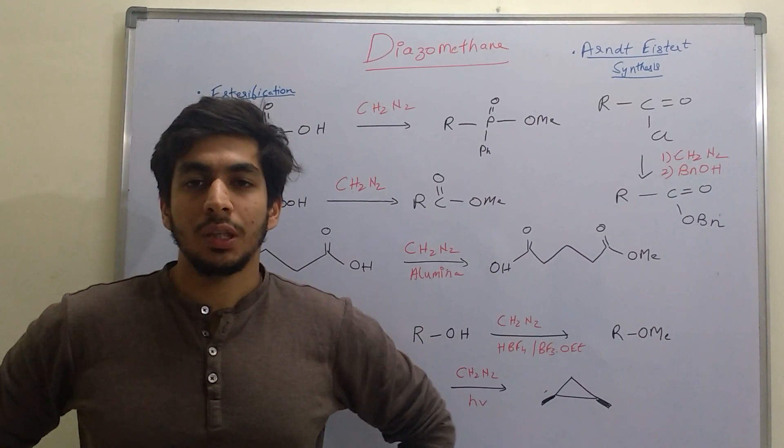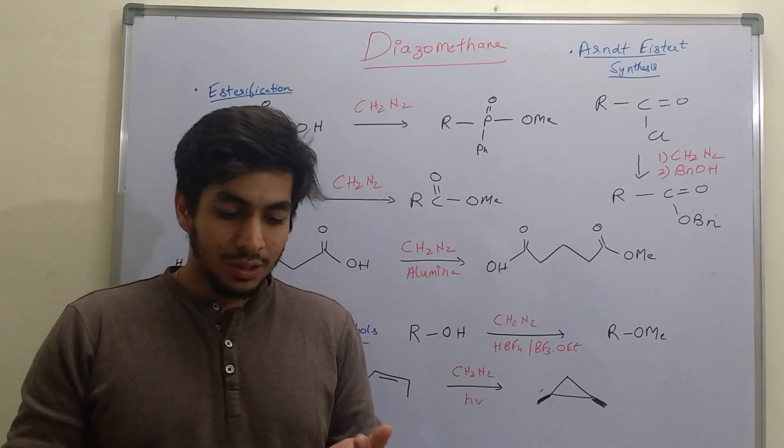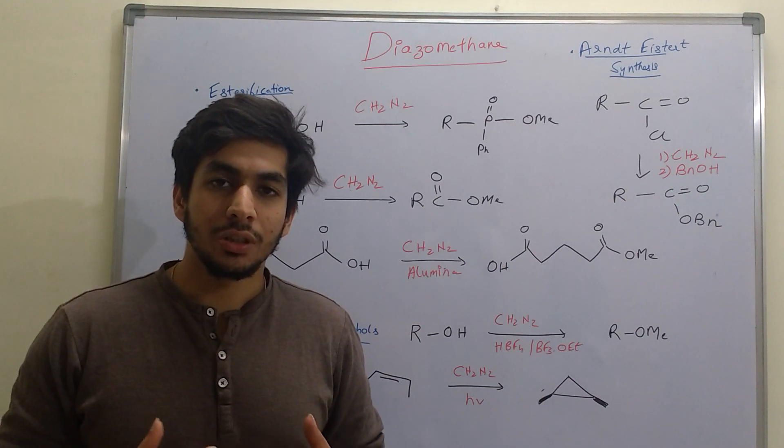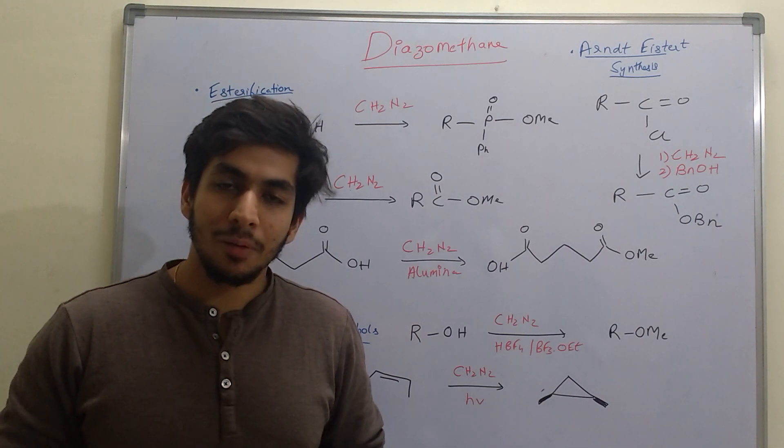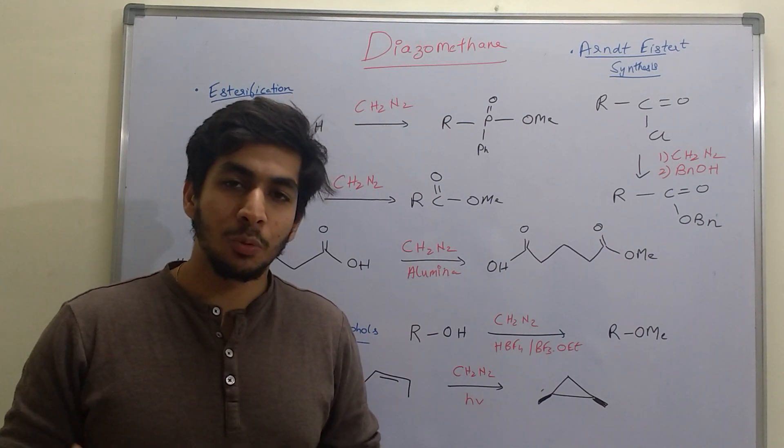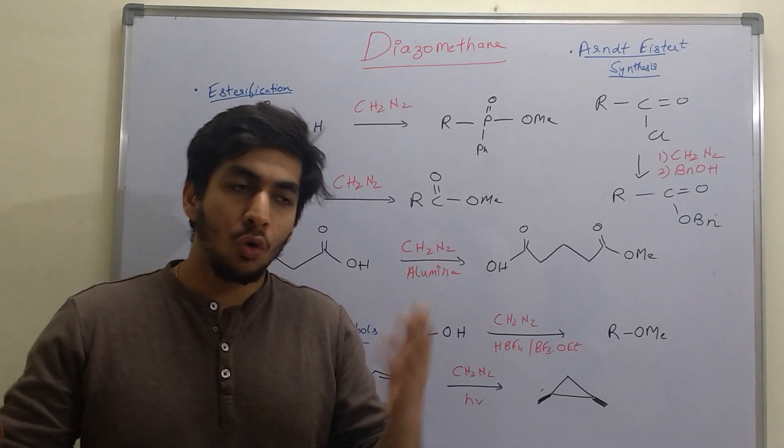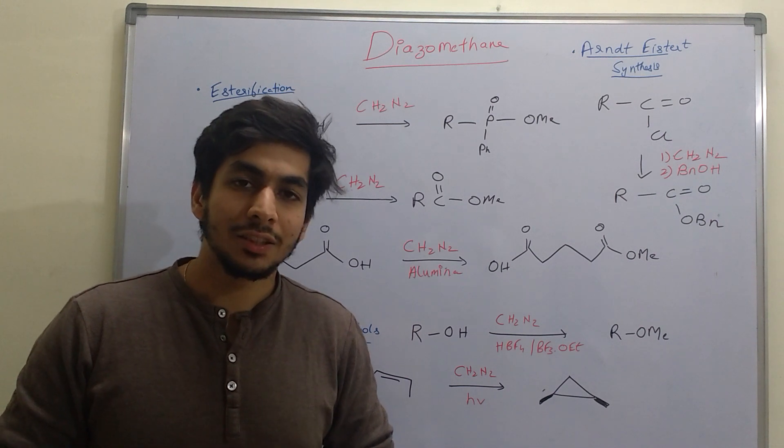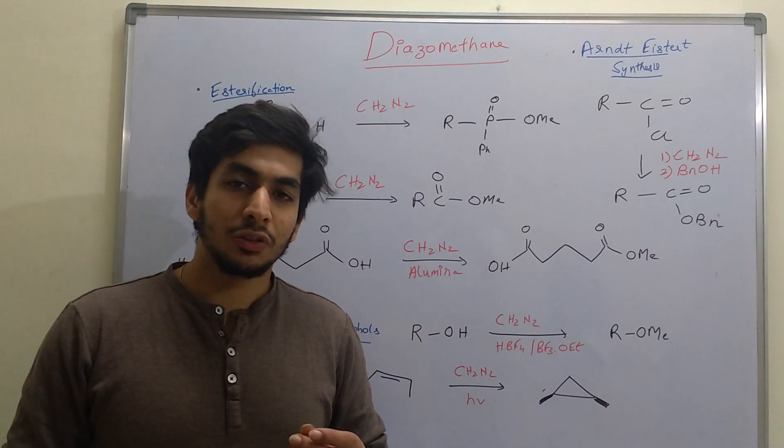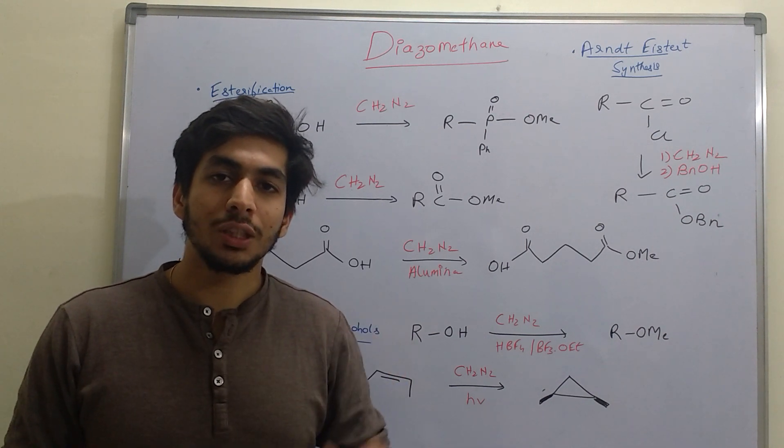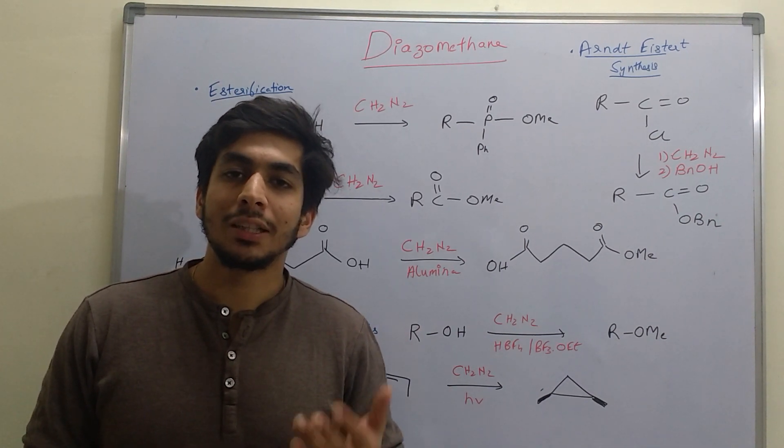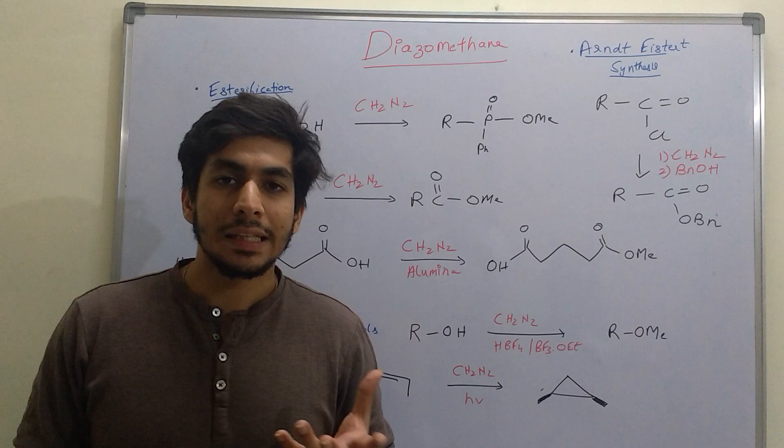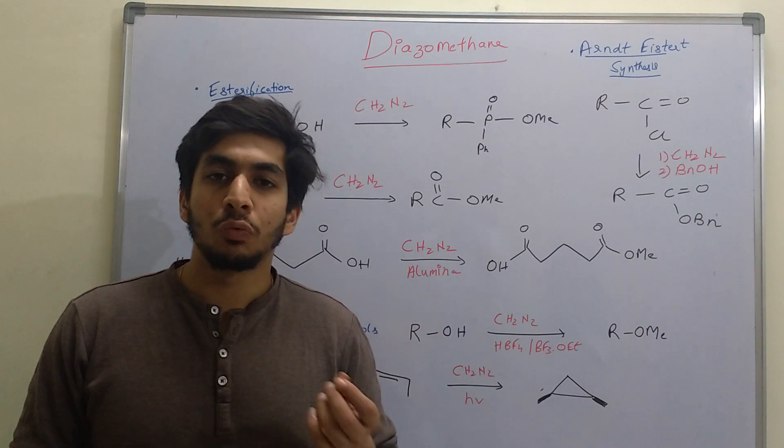Diazomethane is toxic. It's known to cause pulmonary edema—chest congestion and asthma-like symptoms that develop at a later stage. Once you're exposed, you'll never know immediately; only after a while you'll start getting symptoms. It's very explosive, so it's very important to use it in a solvent in diluted form, for example in diethyl ether where it forms a yellowish solution. Even in undiluted form, it's very explosive.